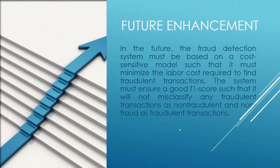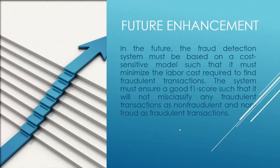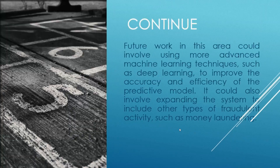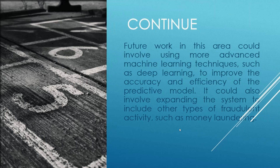In the future, the fraud detection system must be based on a cost-sensitive model that minimizes the labor cost required to find fraudulent transactions. The system must ensure a good F1 score so that it will not misclassify any fraudulent transactions as non-fraudulent or non-fraudulent as fraudulent. Future work could involve using more advanced machine learning techniques such as deep learning to improve the accuracy and efficiency of the predictive model, and expanding the system to include other types of fraudulent activity such as money laundering.